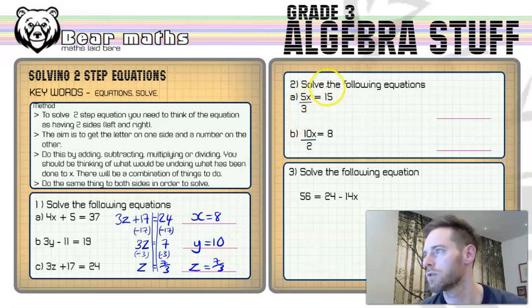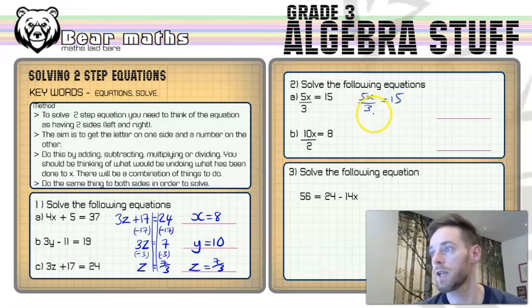Now, question 2. Solve the following equations. This is still two steps. But first of all, we're going to get rid of the number that's on the bottom here by multiplying by 3. So I'm going to write out the equation. 5x over 3 is equal to 15. To get rid of a divided by 3, we multiply by 3. So we've got two sides to the equation. You multiply by 3. And that's how you get rid of the divided by 3 bit. So the only thing you've got left there is 5x.